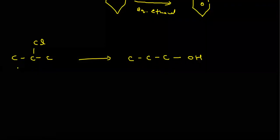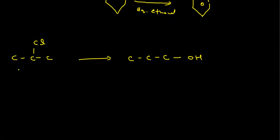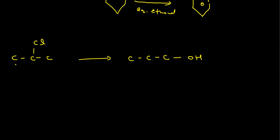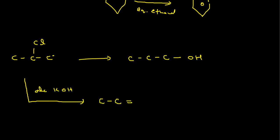The next conversion: given 2-chloropropane, you have to convert it into 1-propanol. If we want to convert to OH, it should first be a 1-halogen, because we can easily convert halogen into alcohol with aqueous KOH. To bring the halogen at the terminal position, we can conduct anti-Markovnikov. For anti-Markovnikov, we need an alkene first — so we take alcoholic KOH. Cl from one side and H from the other side are removed (dehydrohalogenation), forming HCl and giving a double bond.